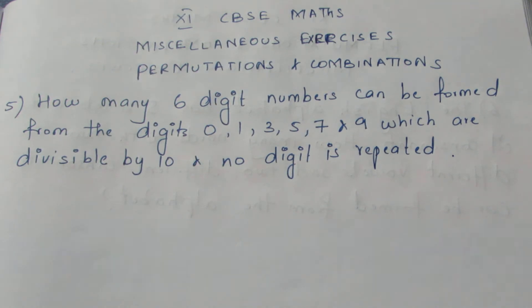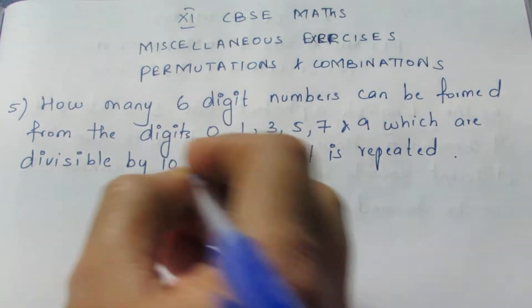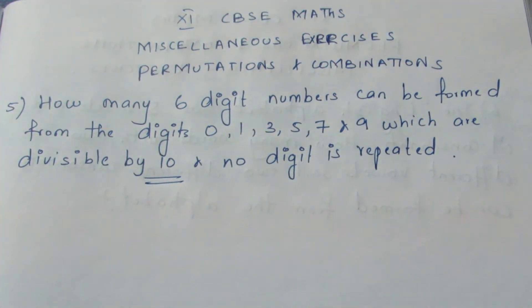Let's see the question. How many 6-digit numbers can be formed from the digits 0, 1, 3, 5, 7, 9 which are divisible by 10? So here the condition is it should be divisible by 10 and no digit is repeated.